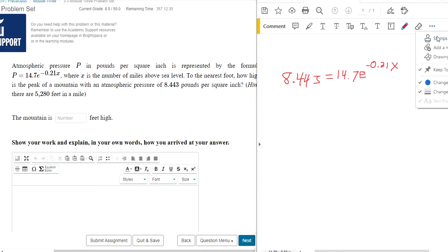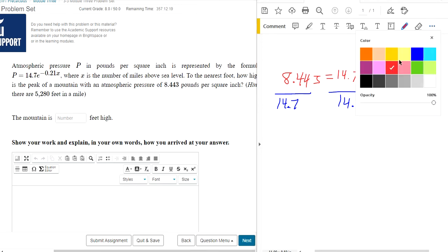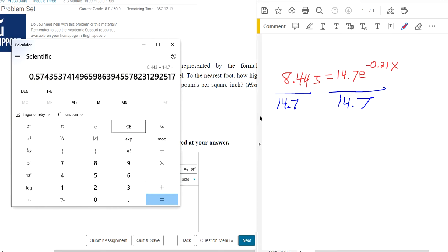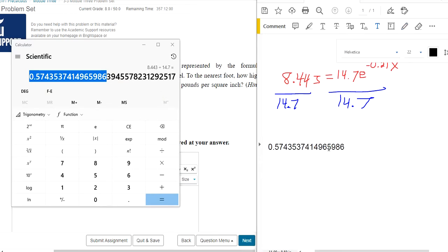So the first thing I would do is I'm going to divide both sides by 14.7. So that's going to give us, with our handy-dandy calculator, 8.443 divided by 14.7. That gives us 0.57 here. I'm going to copy and paste this because I don't want to get this one wrong because of decimals. Probably don't need this many decimals for this program to be happy, for Mobius to be happy, but just to be safe. So that's 14.7 times E. We divide 14.7 first.